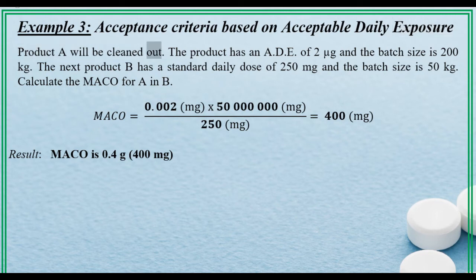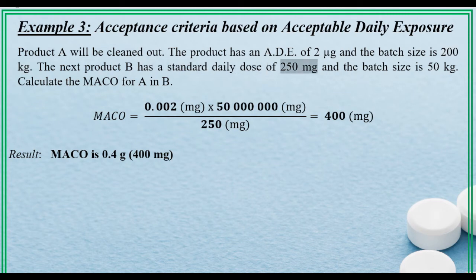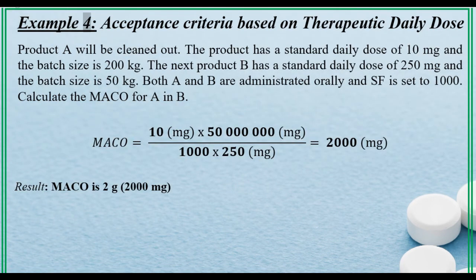Example 3: Acceptance criteria based on Acceptable Daily Exposure. Product A will be cleaned out. The product has an ADE of 2 µg and the batch size is 200 kg. The next product, Product B, has a standard daily dose of 250 mg and the batch size is 50 kg. Calculate the MACO for A in B. Result: MACO is 0.4 µg — 400 milligrams.